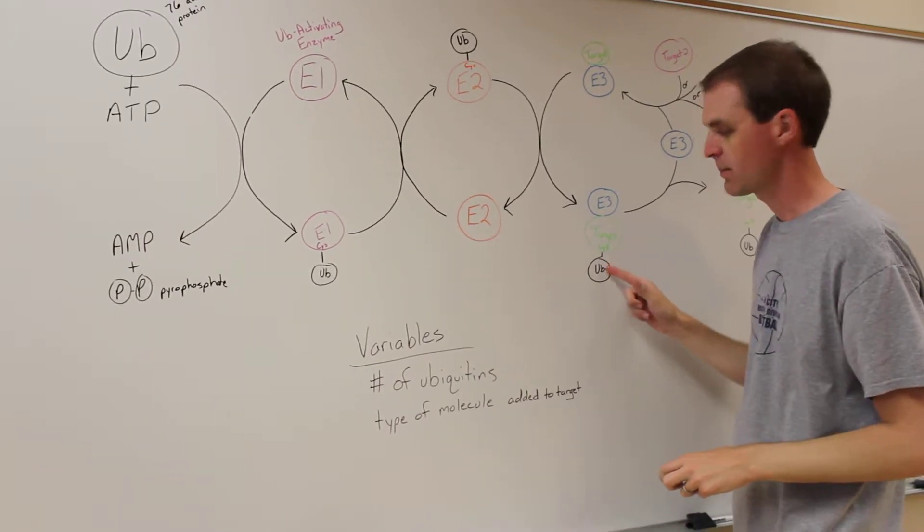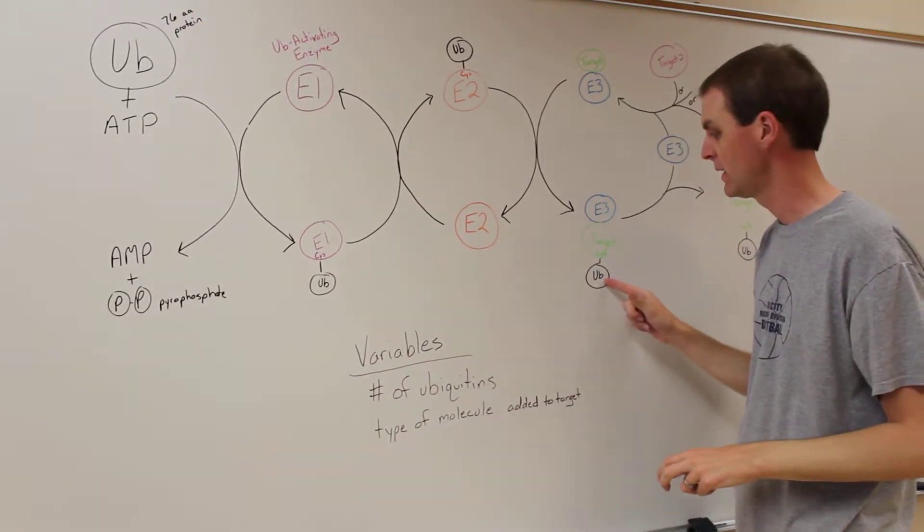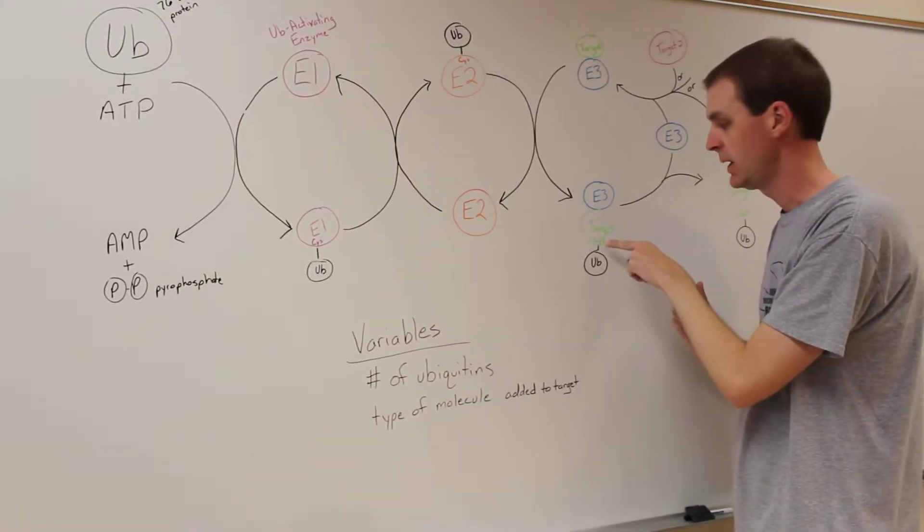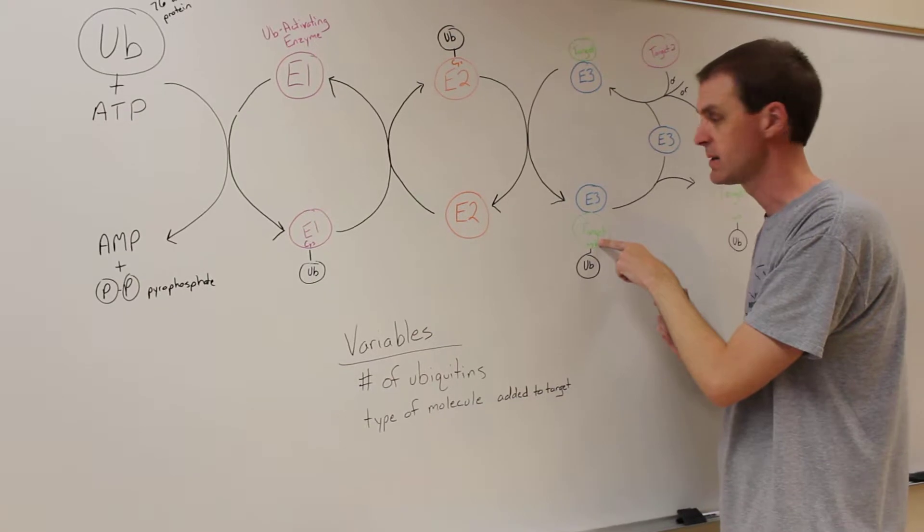So now you've got a target protein that has the ubiquitin covalently attached. These were attached to cysteine residues whereas on the target it's attached to a lysine amino acid residue.